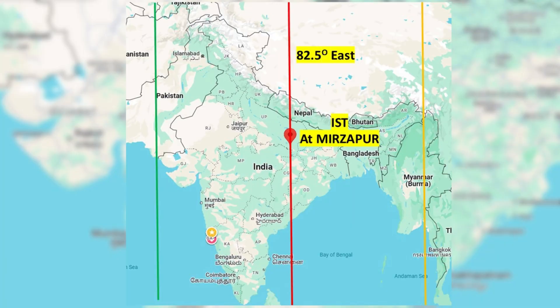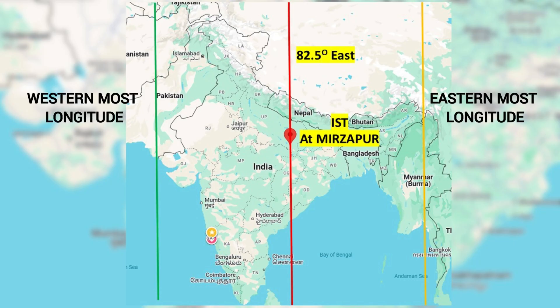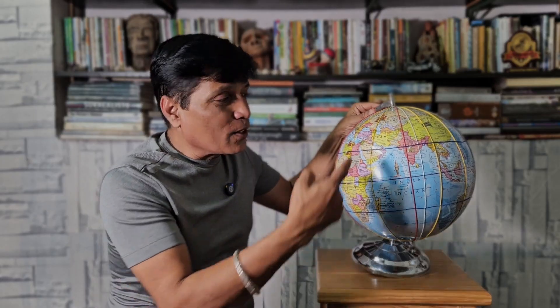This longitude of 82.5 degrees from the Prime Meridian is selected as the reference longitude for India because it lies midway between the easternmost and the westernmost longitudes of India. The easternmost longitude is at the easternmost point of Arunachal Pradesh and the westernmost longitude passes through the westernmost point of Gujarat. The sun in Arunachal Pradesh rises two hours before it rises in Gujarat.